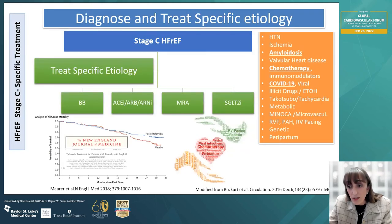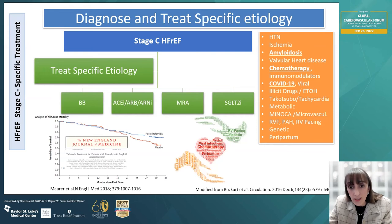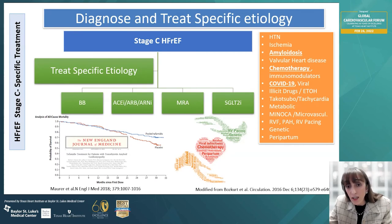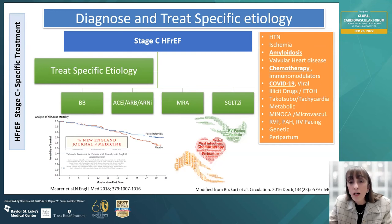In the universal definition, we also emphasize treatment according to specific etiology. There are a variety of indications that require specific treatment strategies in addition to or beyond guideline-directed therapies, such as consideration of tafamidis in cardiac amyloidosis or treatment of the underlying tachycardia in tachycardia-induced cardiomyopathy. These are critical for clinicians to be aware of beyond just phenotypic characterization.